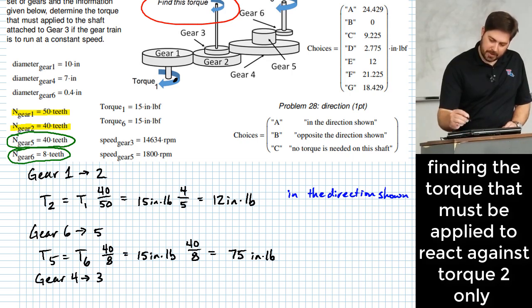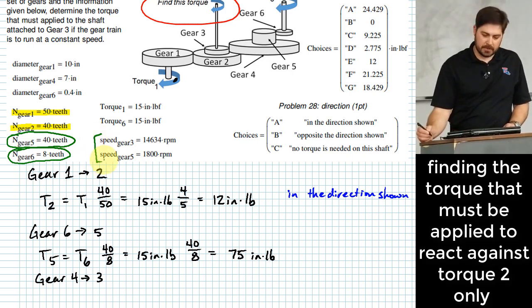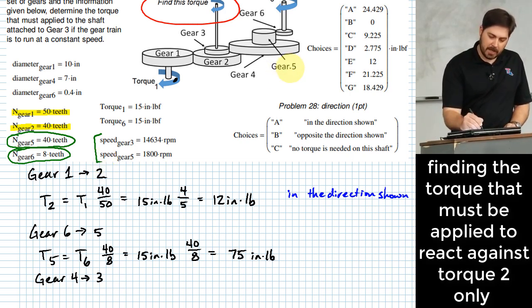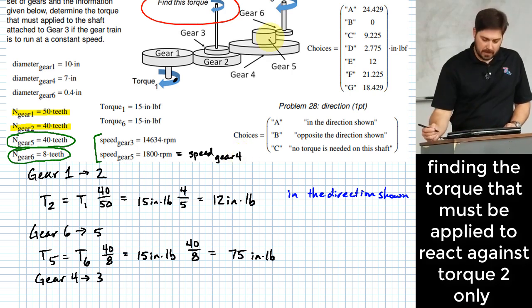Okay. But I do, you guys are on the ball. I do see that I have a ratio of speed between gear three and gear five. How does the speed of gear five relate to the speed of gear four? They're the same. Okay. So that's something you got to realize here, since five and four are attached to each other. This is also the speed of gear four. Because they're attached to each other.